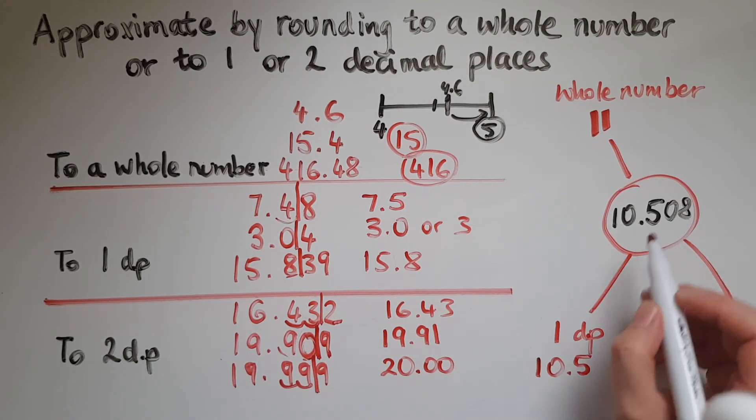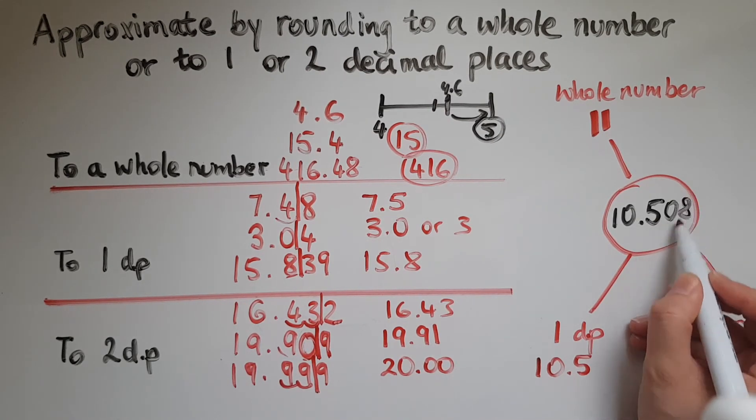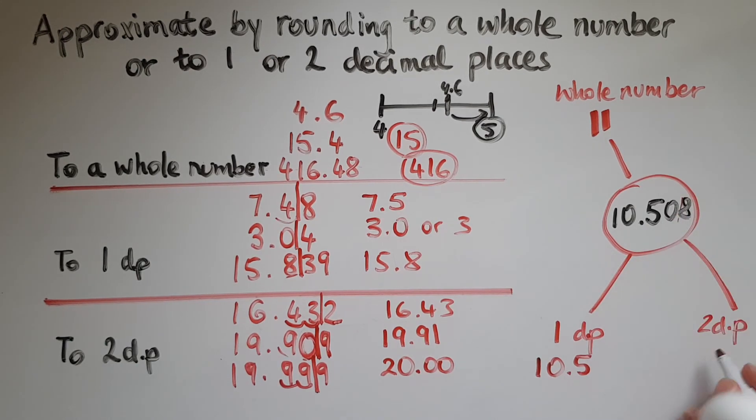To two decimal places, meaning that I need to cut this off here. So I'll look on the right. We've got an 8, meaning that I need to round up. So this becomes a 1. So we have 10.51.